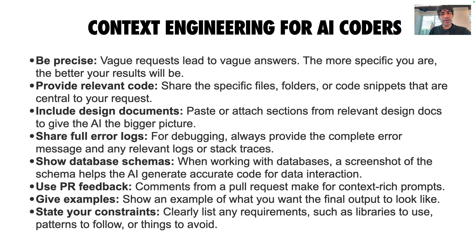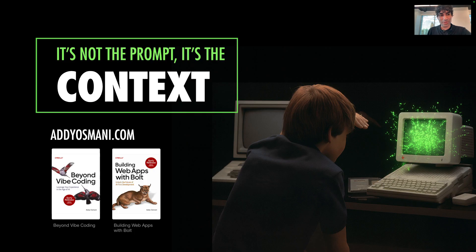Bringing context engineering together for AI coders — be precise to avoid vague answers. Share specific code, design docs, full errors, database schemas. Use pull request feedback for richer prompts, give output examples, state constraints like particular libraries or stacks you're using. Treat the AI like a new hire — assume it may be knowledgeable in some areas but may not know everything. Filter irrelevance: garbage in, garbage out. In conclusion, remember — it's not the prompt, it's the context. Quality context determines if agents succeed or fail. Start applying these patterns and tips today. My books and more free content around topics like this are available on my site.